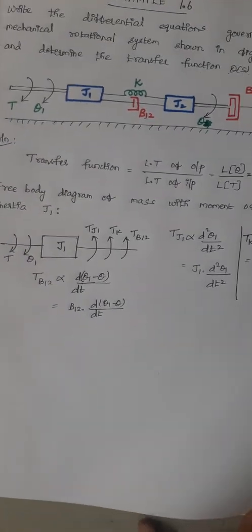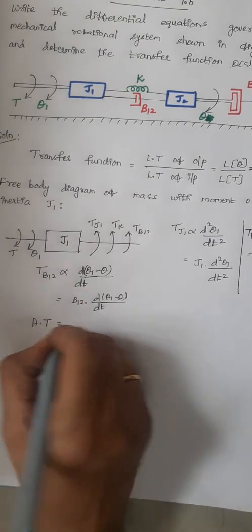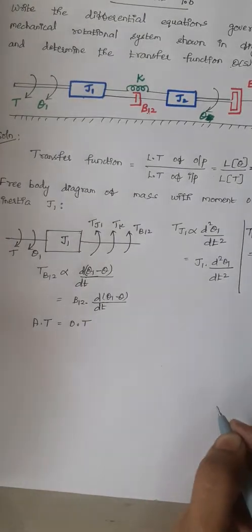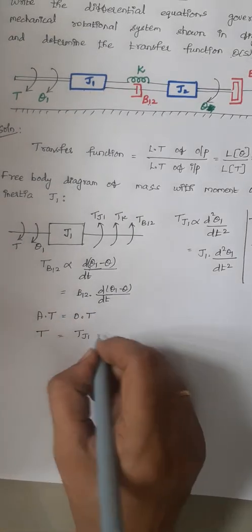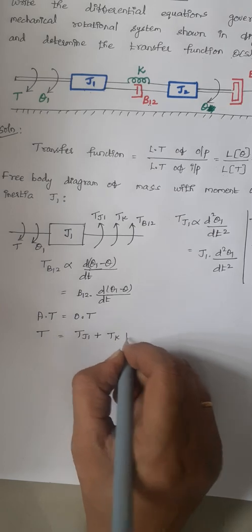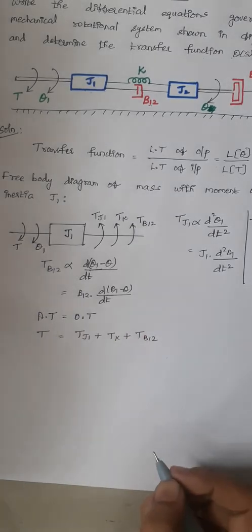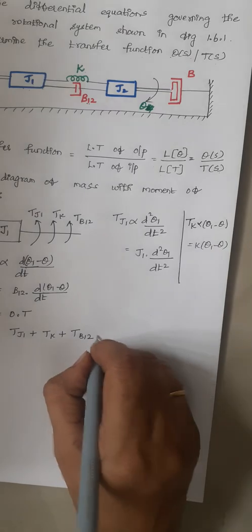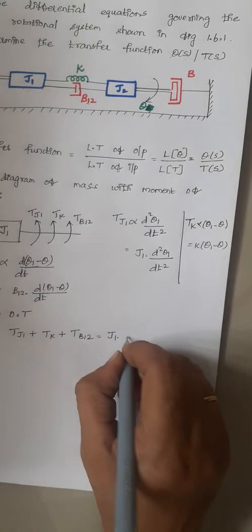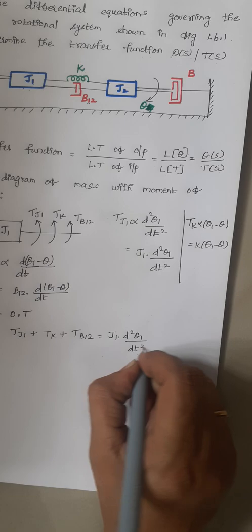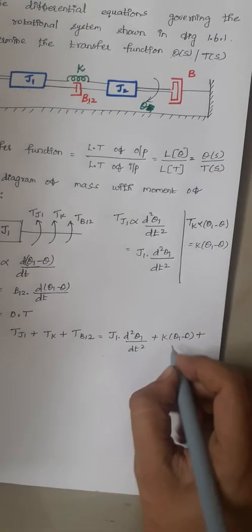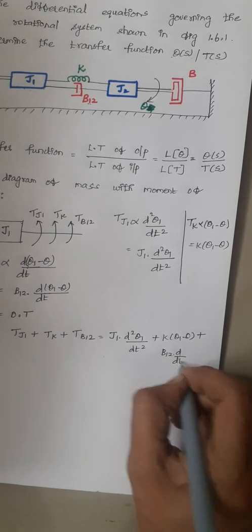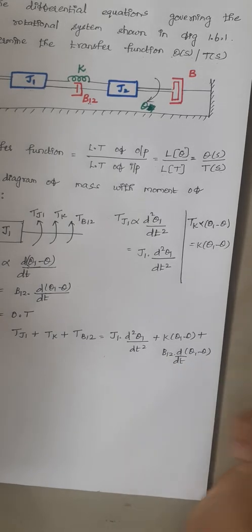Now we write the torque balance equation: applied torque equals opposing torque. The applied torque is T, and the opposing torques are those produced by j1, k, and the dashpot b12. Substituting the respective values gives: j1·d²θ1/dt² + k·(θ1 − θ) + b12·d/dt(θ1 − θ) = T.